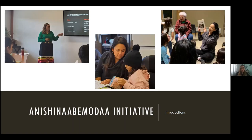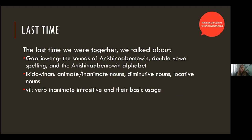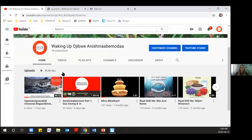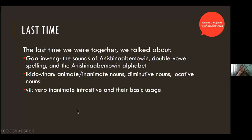Last time in our last session we talked about Gawinweng, the sounds of the language. We talked about spelling in the double vowel and the Anishinaabe Mwen alphabet and how it differs from the English alphabet. Then we talked about Ikedoanon words — animate and inanimate nouns, diminutive nouns, and locative nouns. We also started working on verbs, specifically BII verbs.